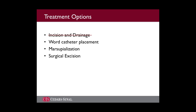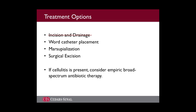Although recurrence is unlikely, if attempts at marsupialization fail, surgical excision may be necessary. Excision is not an office-based procedure due to the discomfort and risk of excessive bleeding. In any of the circumstances above, if cellulitis is present, empiric broad-spectrum antibiotic therapy should be started. Cultures may be obtained, but the results rarely change management.